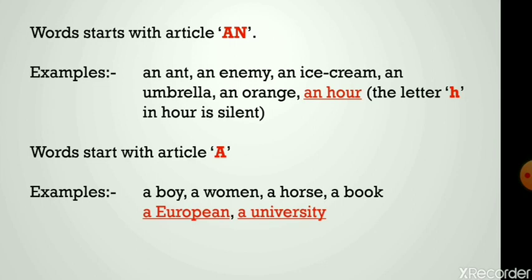Next comes words that start with article 'a.' For example: a boy, a woman, a horse, a book, a European, a university. Why is 'a' used before e and u? E and u are vowels. Why is 'a' used before European and university?